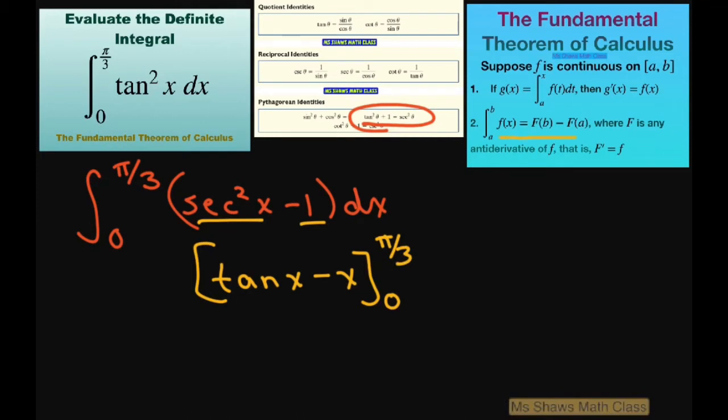And using our Fundamental Theorem of Calculus, we substitute in first π/3. So this is going to be tan(π/3) - π/3.